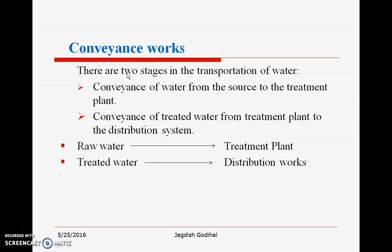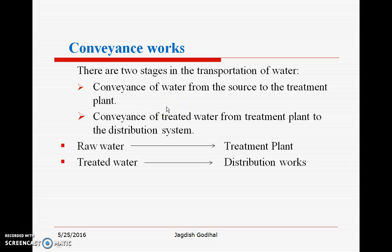Conveyance works involve two stages in the transformation of water: conveyance of water from the source to the treatment plant, and conveyance of treated water from the treatment plant to the distribution system — that is, raw water to the treatment plant and treated water to the distribution network. The quality of water also plays a very important role in designing and planning these conveyance works, with reference to both the quality of the raw water and the quality of the treated water.